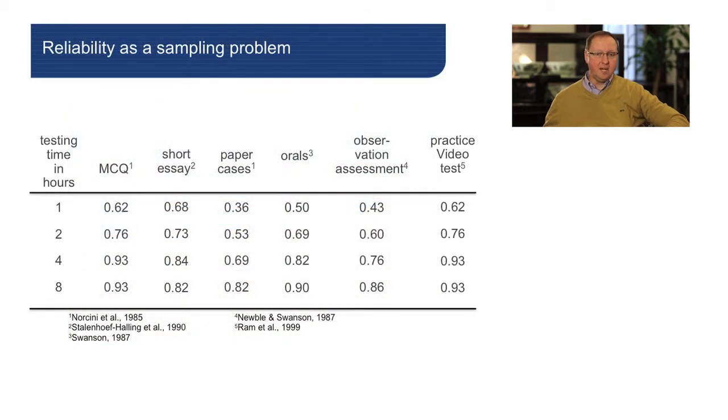Going back to sampling: the simple message would be that you always have to collect more information, but that's not always doable. Not more, but more efficient, is probably more helpful. In programmatic assessment, we combine qualitative and quantitative information — and that's what we do in clinical work as well.